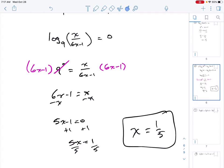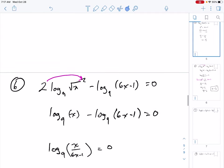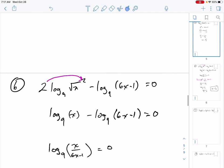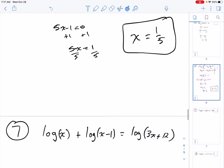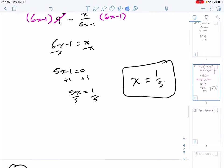Again, I'm looking always, whenever I deal with logs, if I plug 1 fifth in for x, does it result in a negative? 6 fifths take away 1, that's positive. And the square root of a positive, if I put it in here, that's going to be positive. So I'm not putting any negatives inside of a log. We're good. So our answer is 1 fifth.